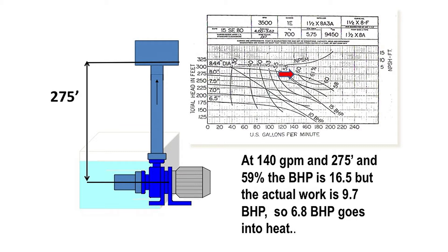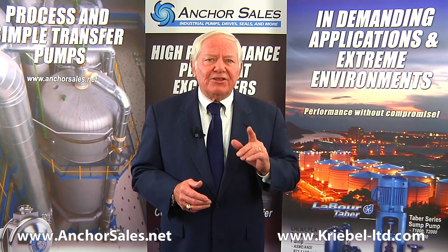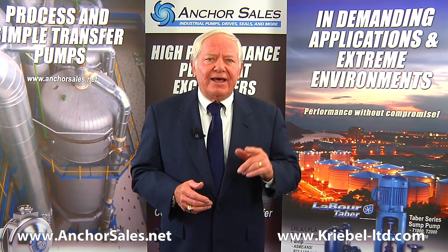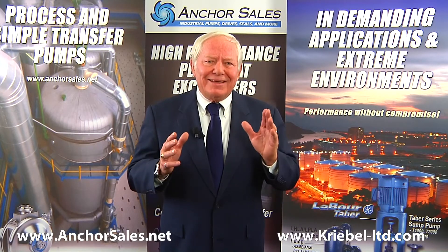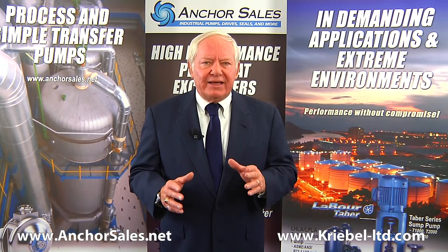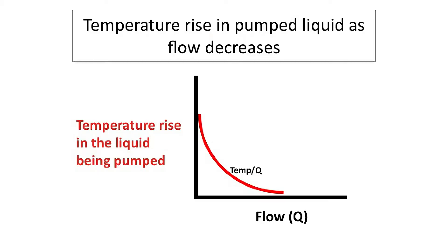That heat can be dissipated by radiation or convection from the pump casing, but the majority is removed by heating the liquid being pumped, increasing the temperature of the pumpage. As the flow decreases, the efficiency decreases, and a greater amount of heat per unit mass goes into the liquid, while there is less and less mass to remove the heat. This means the temperature rise across the pump increases asymptotically toward shutoff.